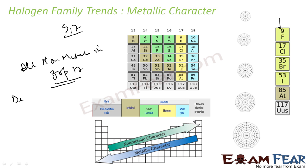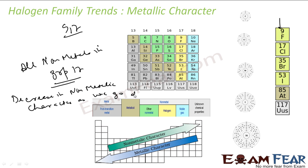If you go down the group, there is a decrease in non-metallic character, or equivalently an increase in metallic character as we go down. Metal gives electrons — sodium is an example. Non-metal accepts electrons. Chlorine has more tendency to accept electrons because of its small size, whereas bromine has less tendency to accept electrons because of its bigger size.